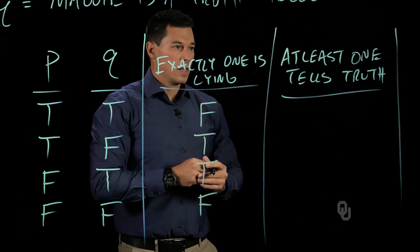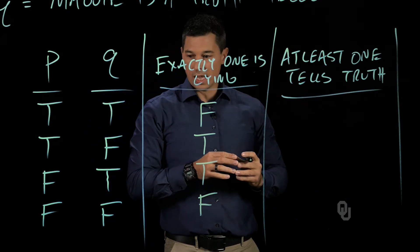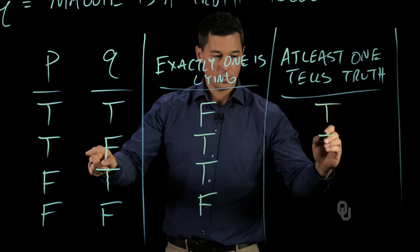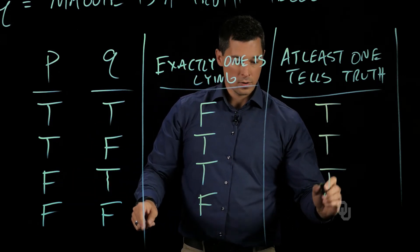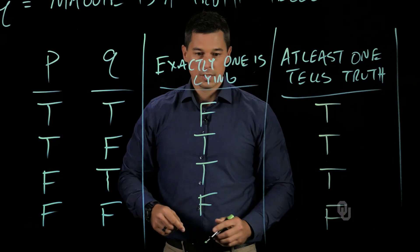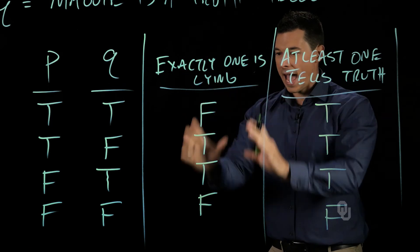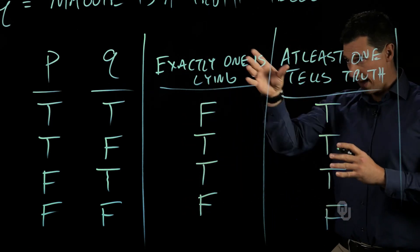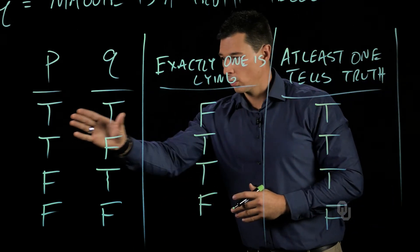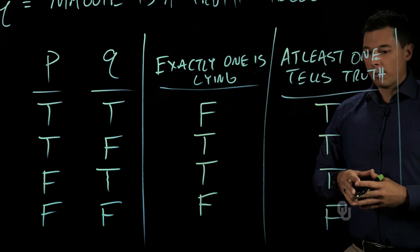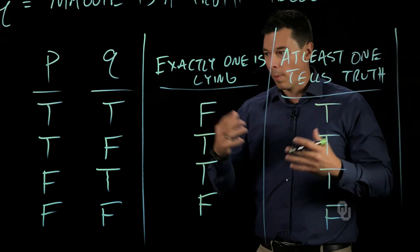Now we can evaluate this statement: at least one of us is telling the truth. So in this case, that would be true. Here, that would also be true. Here it would be true. And here it would be false. So now we have the all-the-world possibilities. Then we're able to decompose the problem, analyze the individual statements as they are with respect to the possibility in the world, and then now we can analyze the problem in a quantitative and robust way.